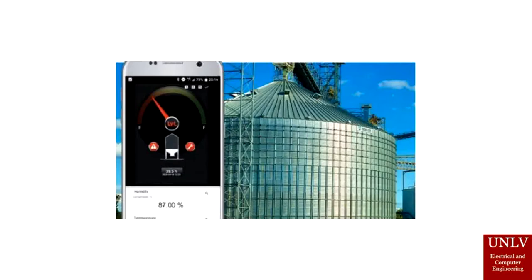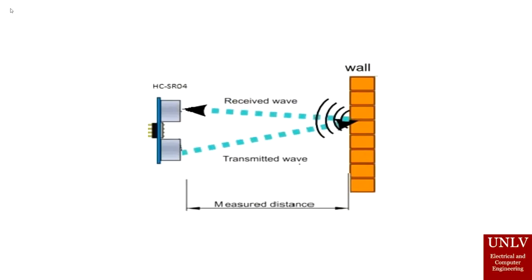This device will be able to communicate the current liquid level of the tank to the user. SmartSilo will use a distance sensor to monitor the liquid level. The distance sensor is external and provides the most crucial reading for our project. The sensor emits ultrasonic waves that reflect off the solid or liquid surface and return to the sensor.